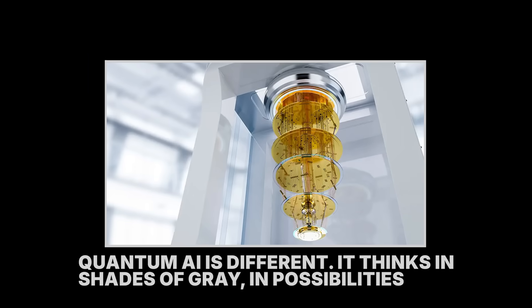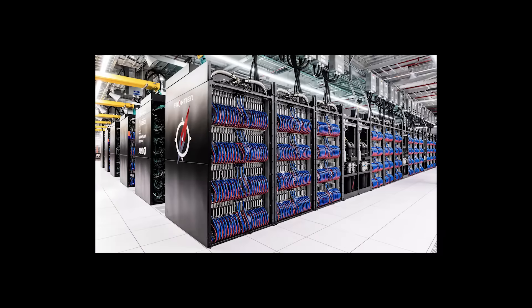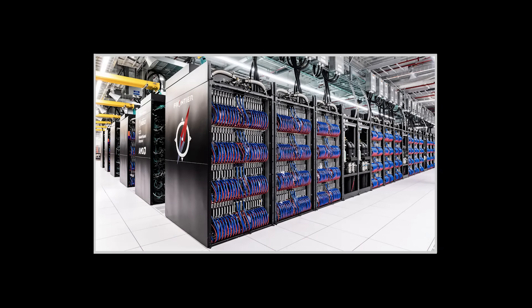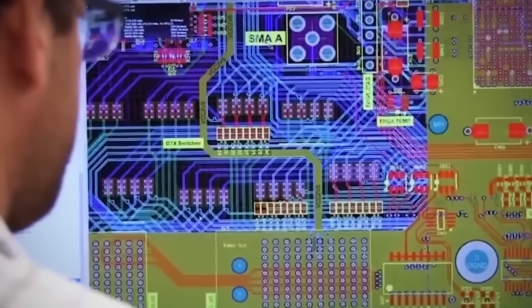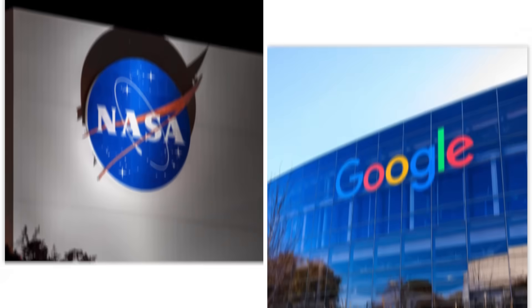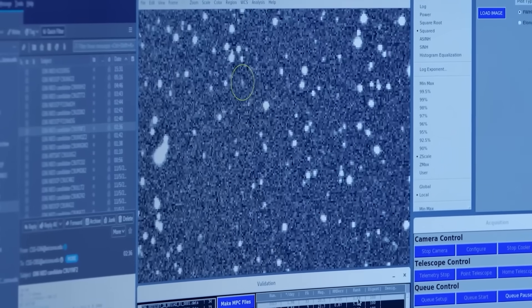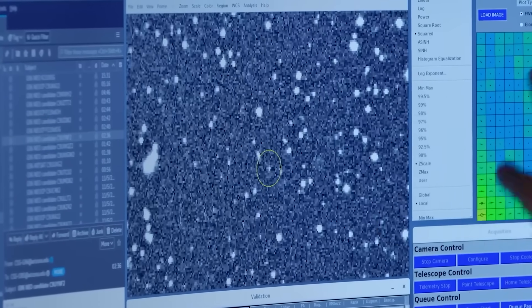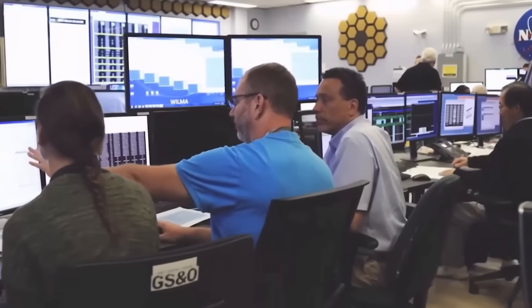A normal computer thinks in ones and zeros, in black and white. It can process a lot of information, but it's limited by its linear, step-by-step approach. Quantum AI is different. It thinks in shades of gray, in possibilities. It uses the weird and wonderful rules of quantum mechanics to process information in a way that's fundamentally different from a classical computer. It can hold multiple, contradictory ideas in its mind at the same time, exploring every possible connection, every potential pattern, all at once. It's like having a million detectives working on the same case, all sharing their findings in real time.